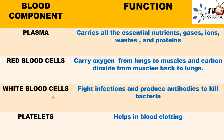White blood cells fight infections by producing antibodies and killing bacteria. Platelets help in blood clotting, preventing blood from oozing out by making a barrier.